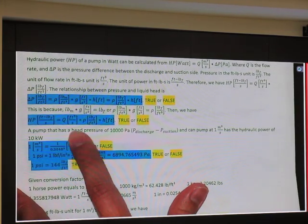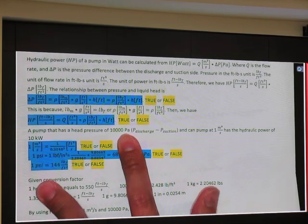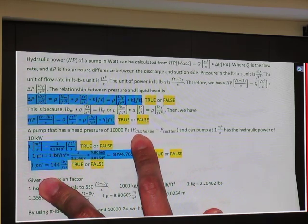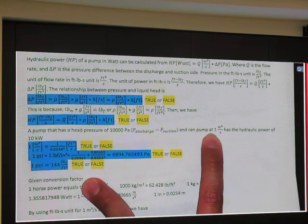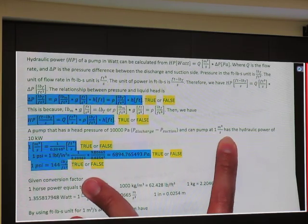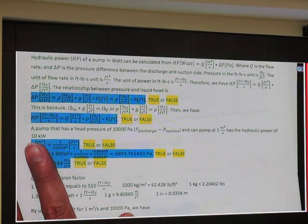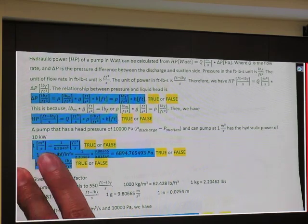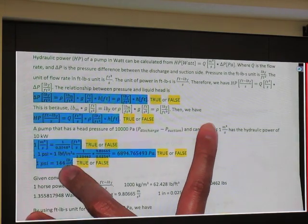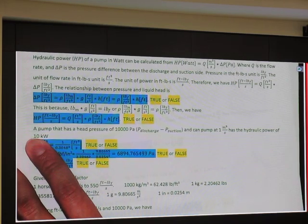A pump that has a head pressure of 10,000 Pascal, or in parentheses discharge minus suction, and can pump at one cubic meter per second has a hydraulic power of 10 kilowatts. This is not hard to prove, it is true. 10,000 multiplied by one equals 10,000. 10,000 watts is 10 kilowatts.